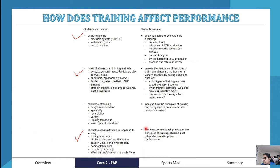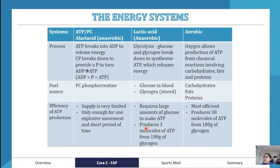We have three energy systems: the ATP-PC system, also called the alactic acid system, which is anaerobic; the lactic acid system, which is also anaerobic; and the aerobic system. For each of these, you want to know the process, the fuel source, efficiency, duration, cause of fatigue, byproducts, recovery time, and sport examples.